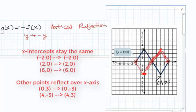So it looks something like this. A vertical reflection when you have a negative outside or out front of the function.